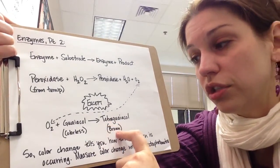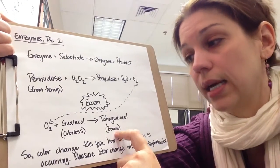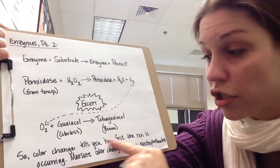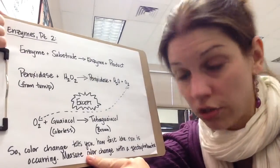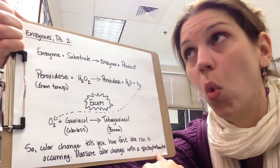What we want to be able to do is to monitor our rate of reaction based on color change of the reaction. So the color change tells you how fast the reaction is happening. We measure color change with a spectrophotometer. That's the tool that we use to quantify color.